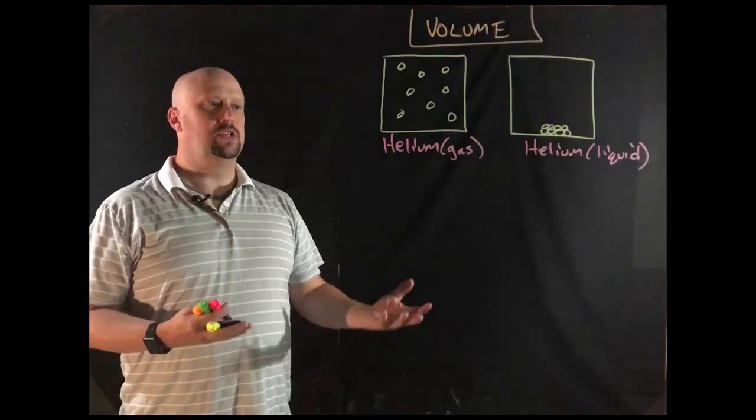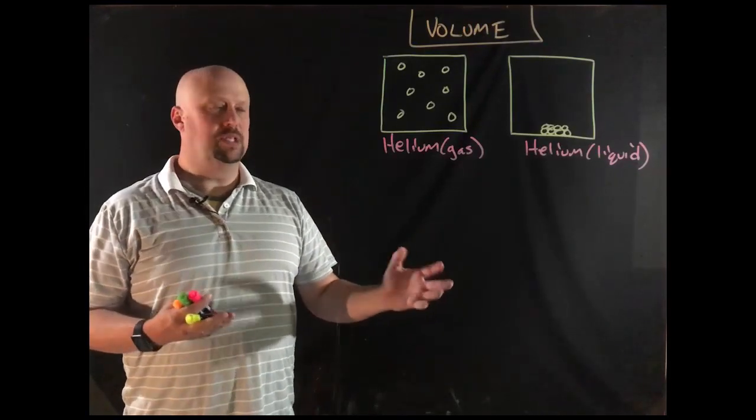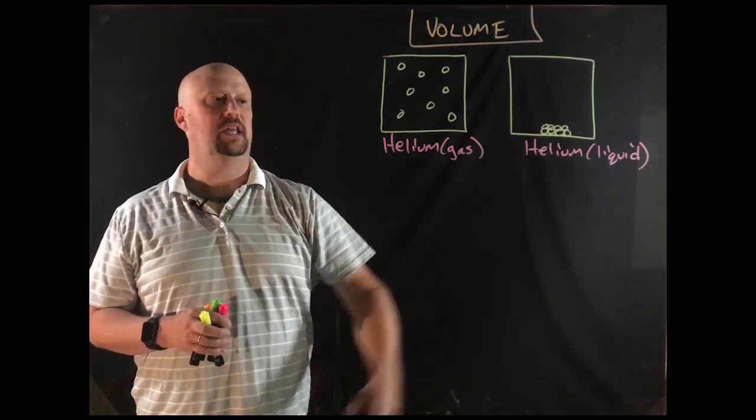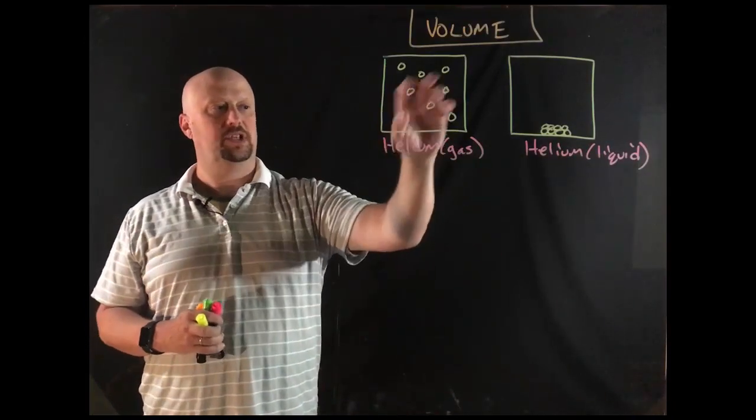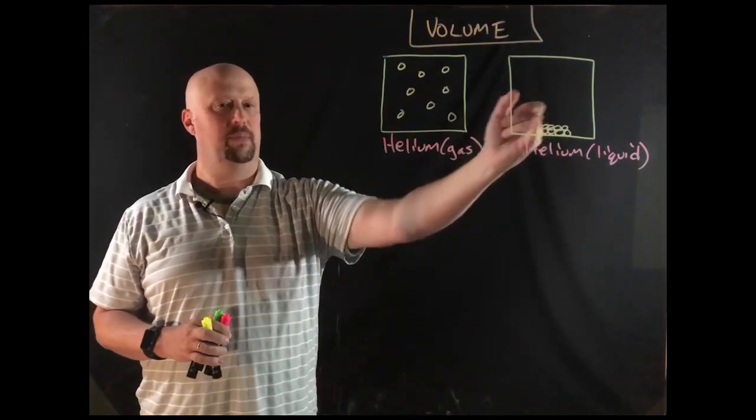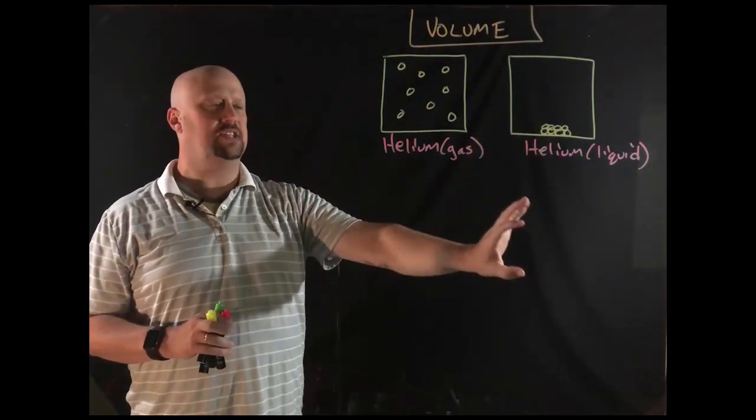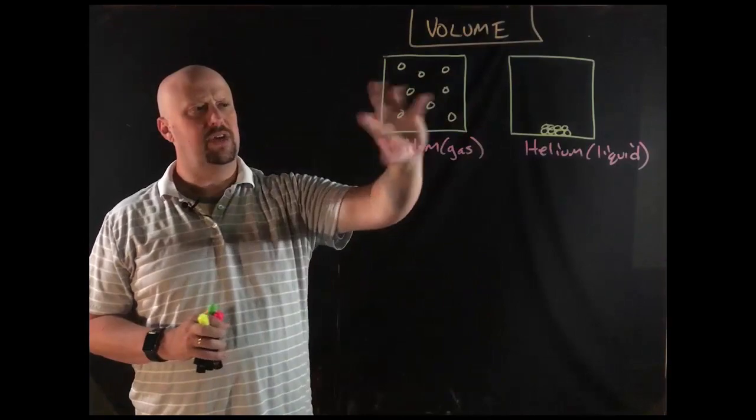Okay, so what about if we're talking about the volume instead of just the mass? So in this case, I've got helium in gas phase and in liquid phase. Now, if it's all helium and I've got the same number of particles, which I do, I have eight particles of each, then that means the masses are the same. So the only thing I've changed in this scenario is what is the density? So obviously in a gas, the particles are really far spread out.